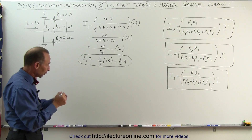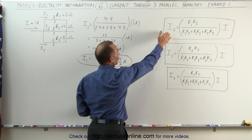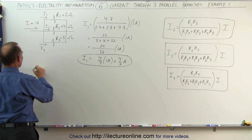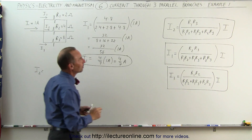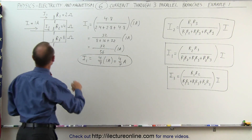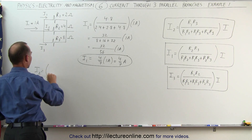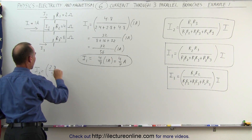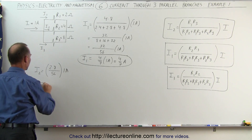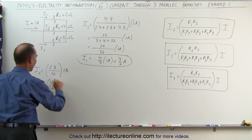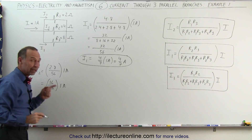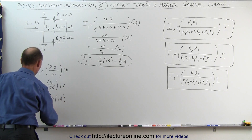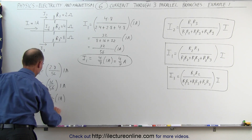Now that I know what the denominator is equal to, that will of course be the same for the denominator of the other two currents, I2 and I3, because all three denominators are exactly the same. I2 can now be found by taking the product of the resistance of the other two branches, R1 and R3, so that's 2 times 8, divided by 56, multiplied times 1 amp. This equals 16 over 56 times 1 amp, and dividing by 8 gives 2 over 7 times 1 amp, so I2 is equal to 2 sevenths of an amp.